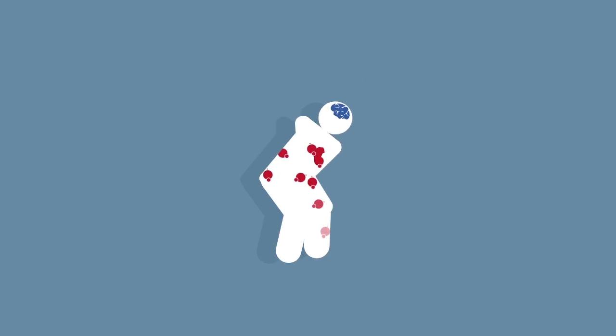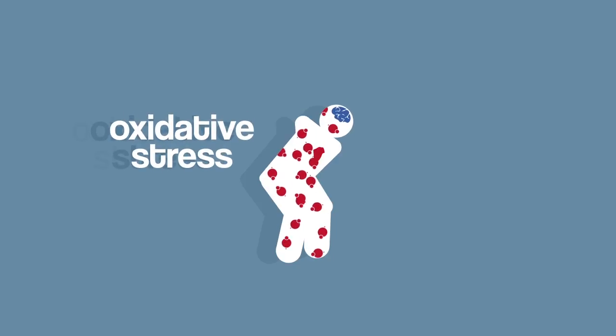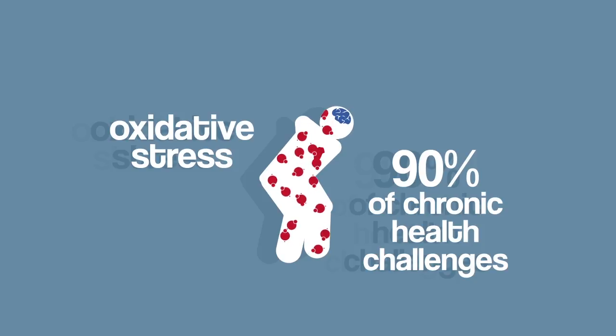Continuous damage caused by free radicals is called oxidative stress, which is basically rusting, and it's been linked to 90% of chronic health challenges including cancer, diabetes, heart disease, and even aging.